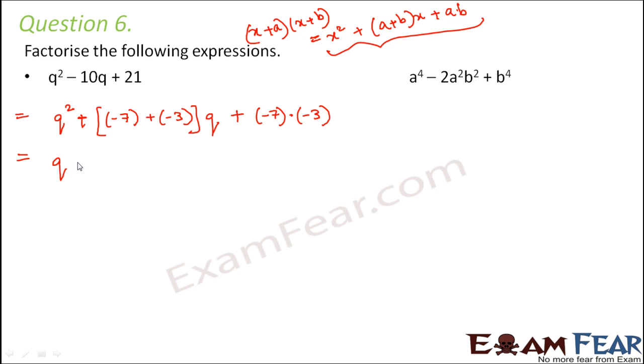So x is q here. What is a? a is minus 7. So q plus minus 7 into q plus minus 3. So this can be written as q minus 7 into q minus 3.